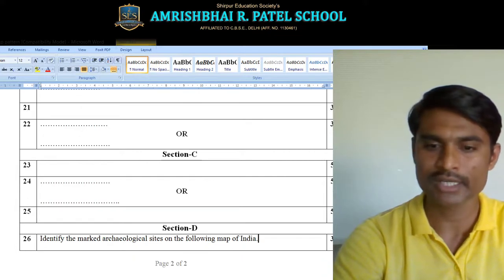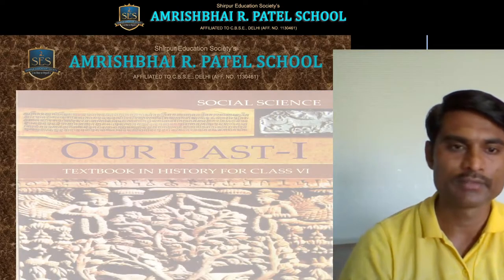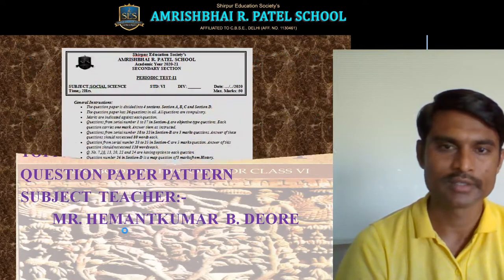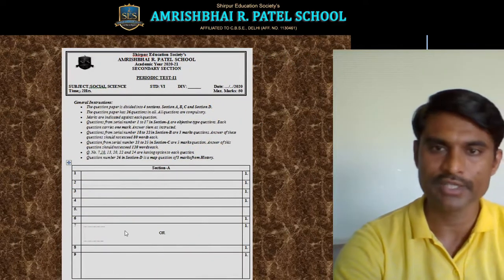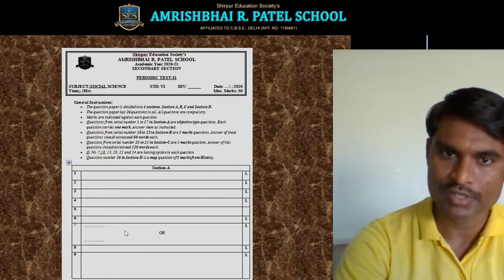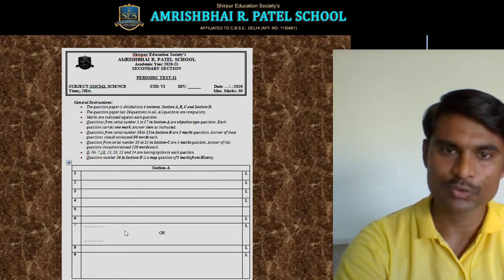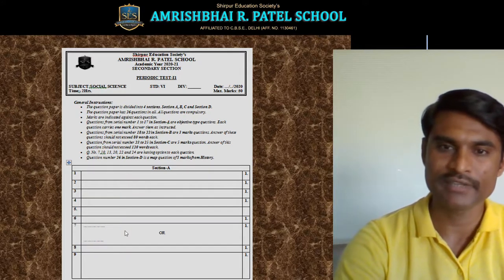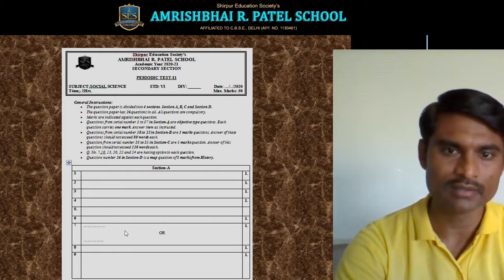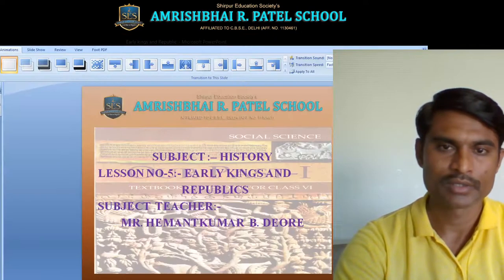In this way I have explained the question paper pattern for periodic test 2. Let's look at it again in graphical form. This is periodic test 2 question paper pattern. Complete general instructions are given. The paper is divided into 4 sections: Section A, B, C, and D, with 26 questions in all. Section A is Q1 to 17 for 1 mark. Section B is Q18 to 22 for 3 marks. Section C is Q23 to 25 for 5 marks. Questions 7, 13, 20, 22, and 24 have options. Question 26 in Section D is a map question.